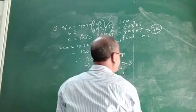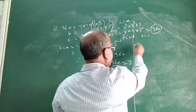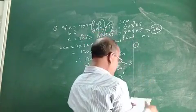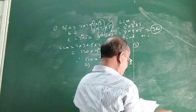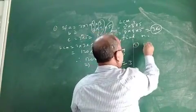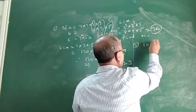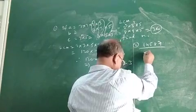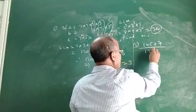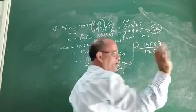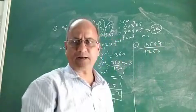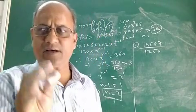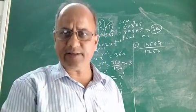Now let us discuss another question. Suppose you are given a rational number: 14587 divided by 1250. You know what a rational number is — it is the ratio of two integers.